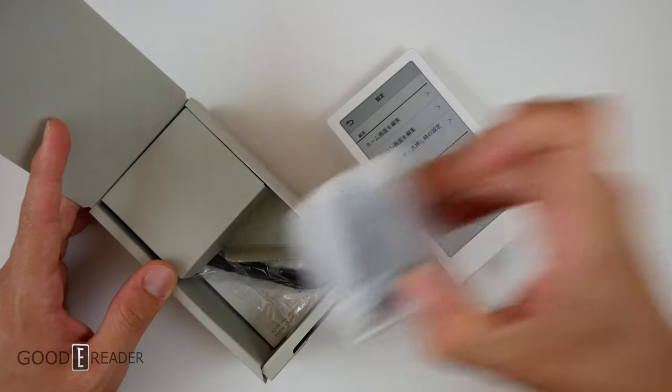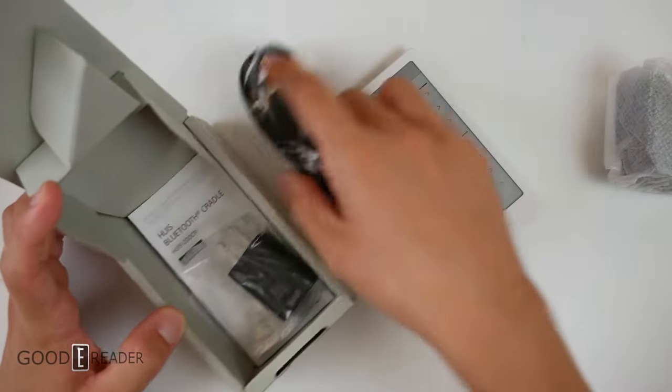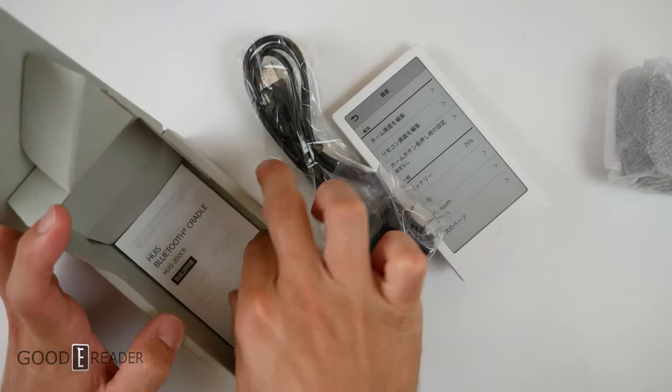So we have a cradle here and what else in the box? You get everything here. This is a Bluetooth cradle, by the way, which we will be discovering as we go on.